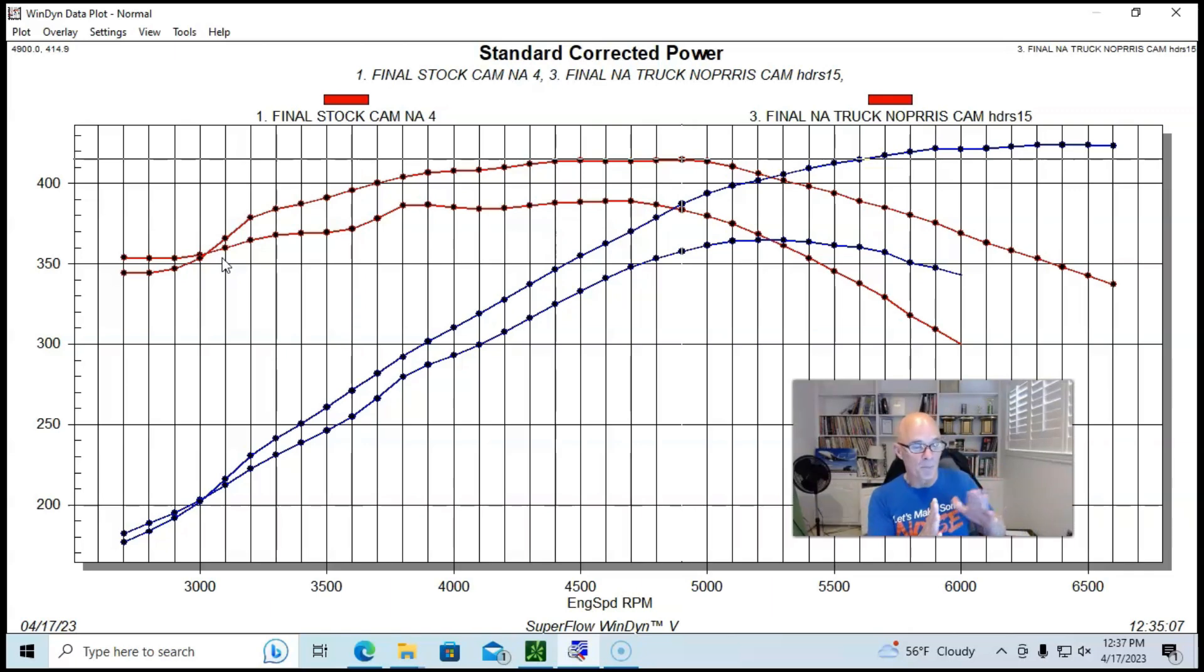The moral of this story is yes, these cams can give you good horsepower gains, good peak torque gains. They can even give you maybe some in the 3,500, 4,000, 4,500 range, which I kind of figure is the towing range. But 2,000, 2,500, 3,000 - you're not going to get big torque gains from any camshaft.